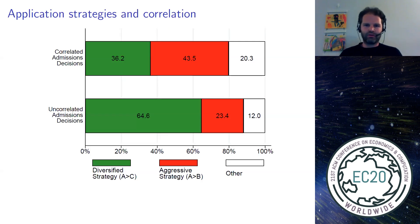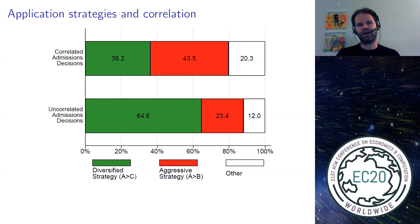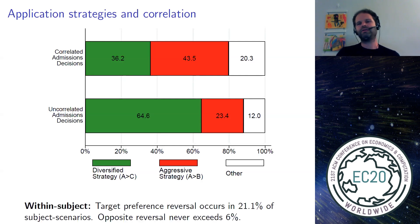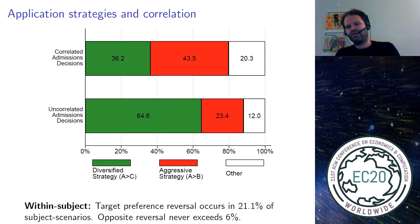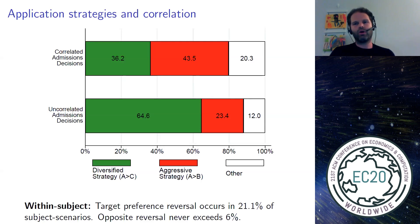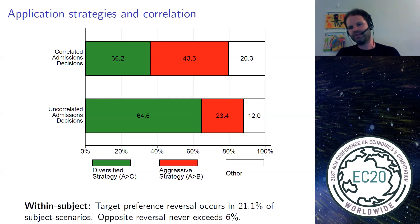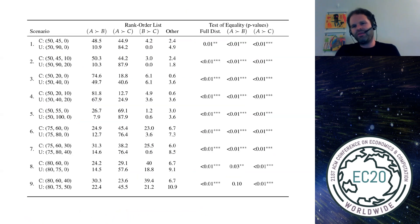The lower bar paints a different picture: when admission chances are not correlated, the fraction of diversified strategies nearly doubles and the fraction of aggressive strategies is nearly half. Looking within subjects, out of about 25% of rounds where we saw violations of IIA — where the subject chose the aggressive strategy in one frame and the diversified strategy in the other — more than 85% of cases correspond to choosing the aggressive strategy under correlation and the diversified strategy under independence. We find very similar results looking at each scenario separately.